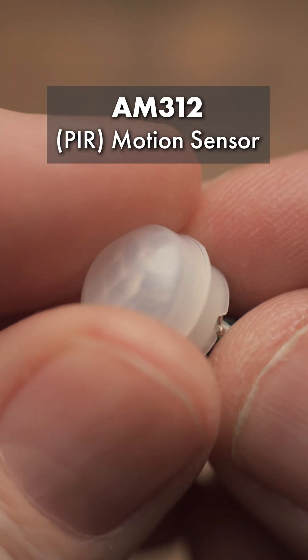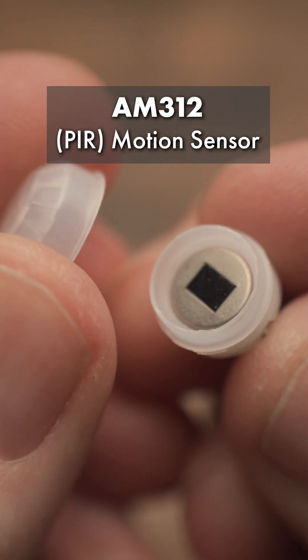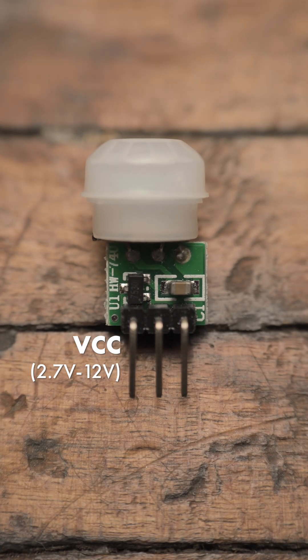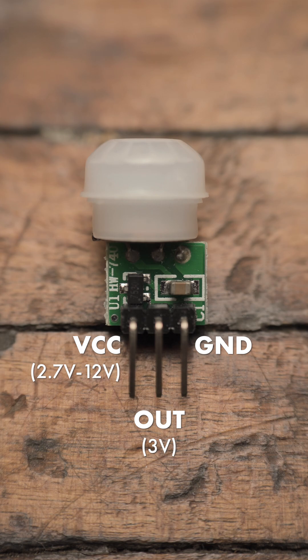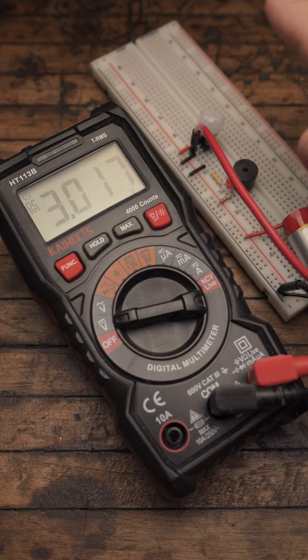The AM312 is a compact passive infrared motion sensor. It has three pins: VCC for power input, ground, and an out which outputs three volts for two seconds when motion is detected.